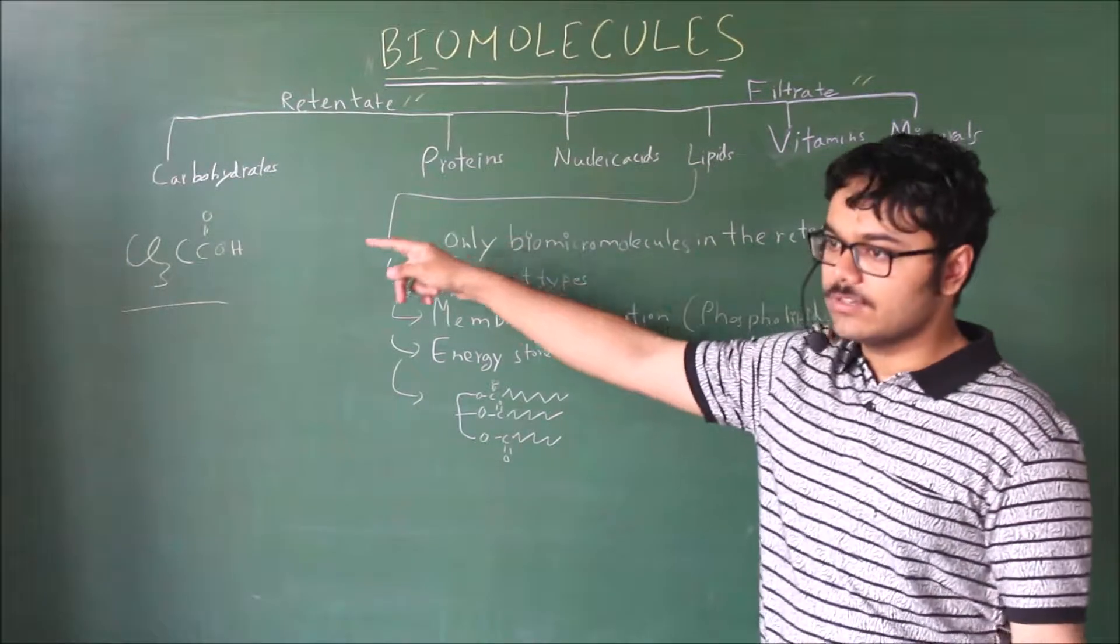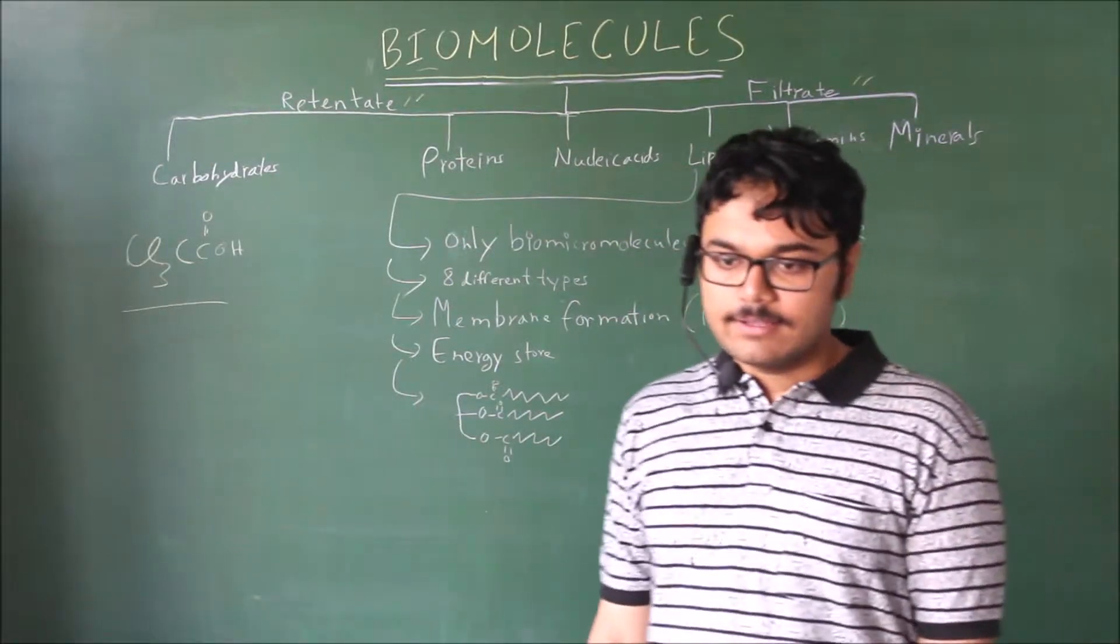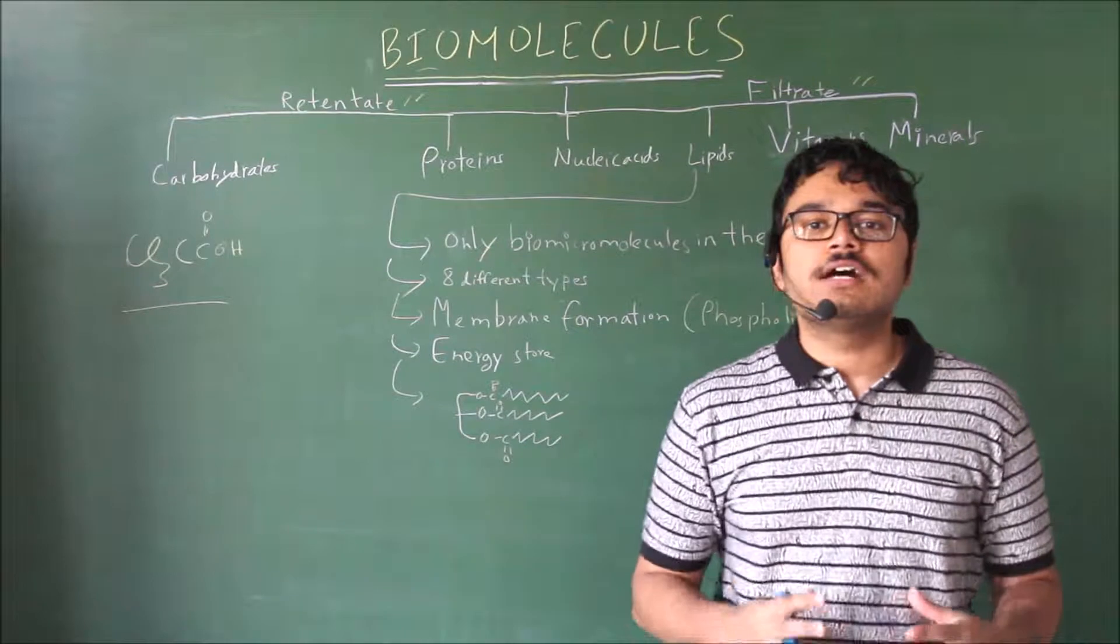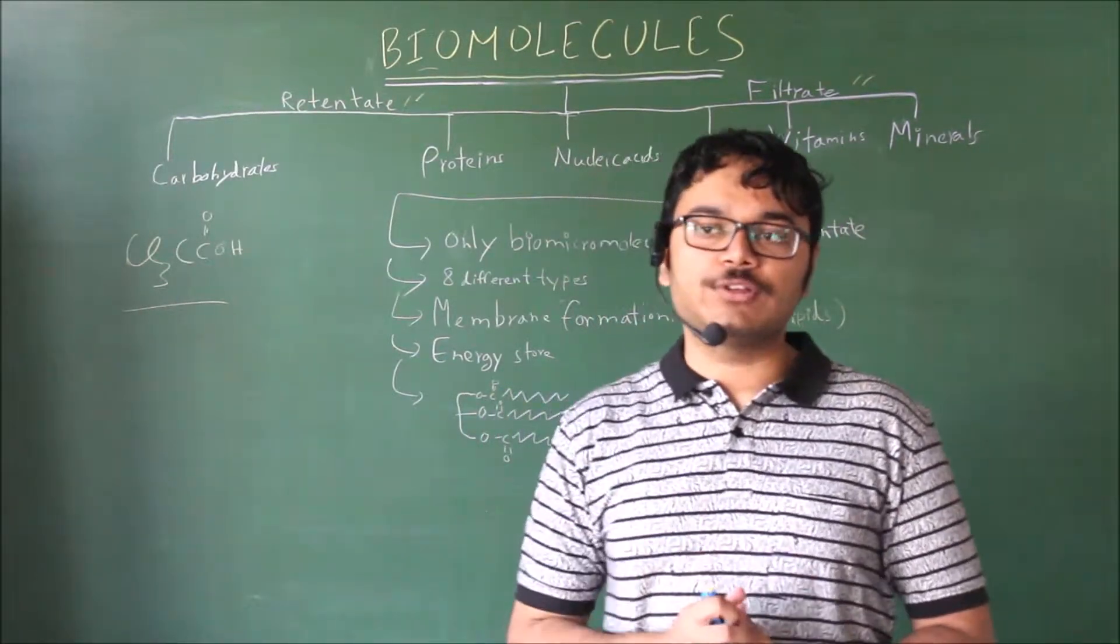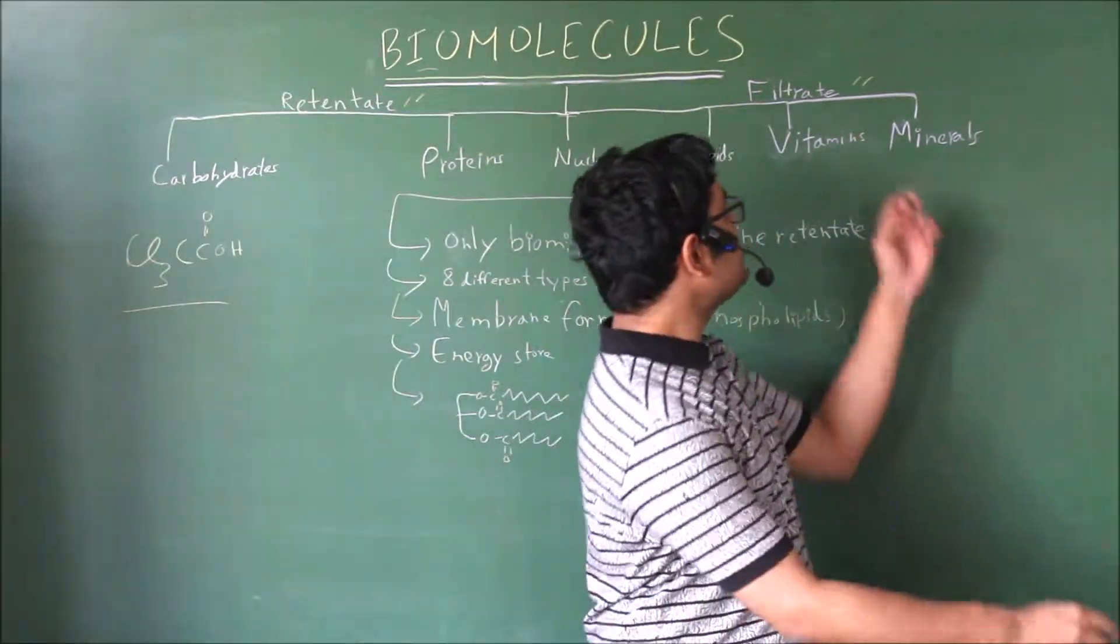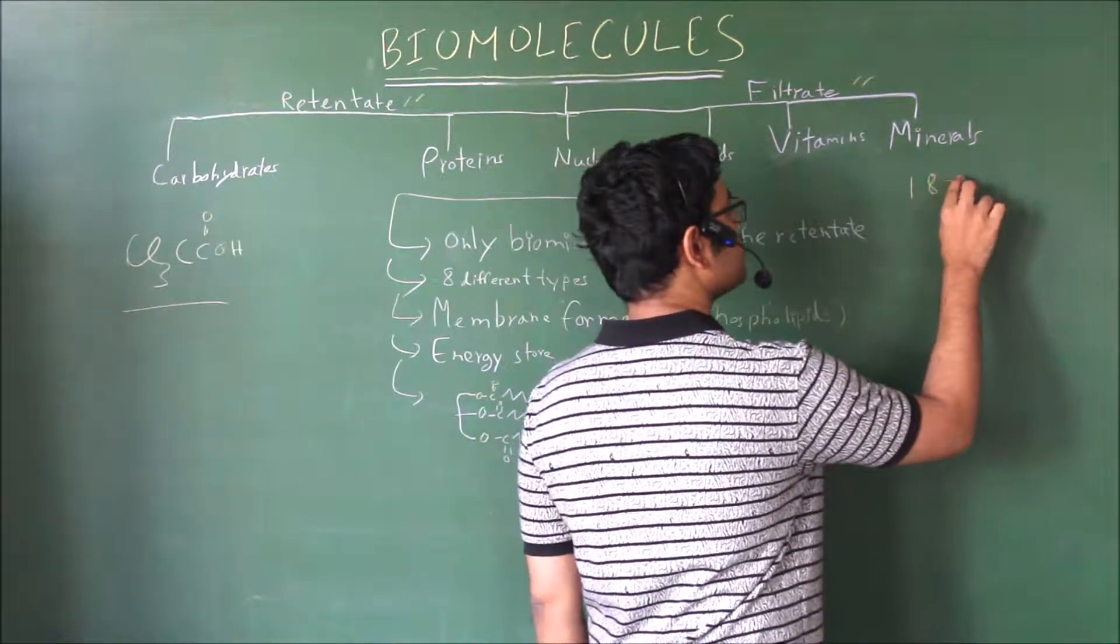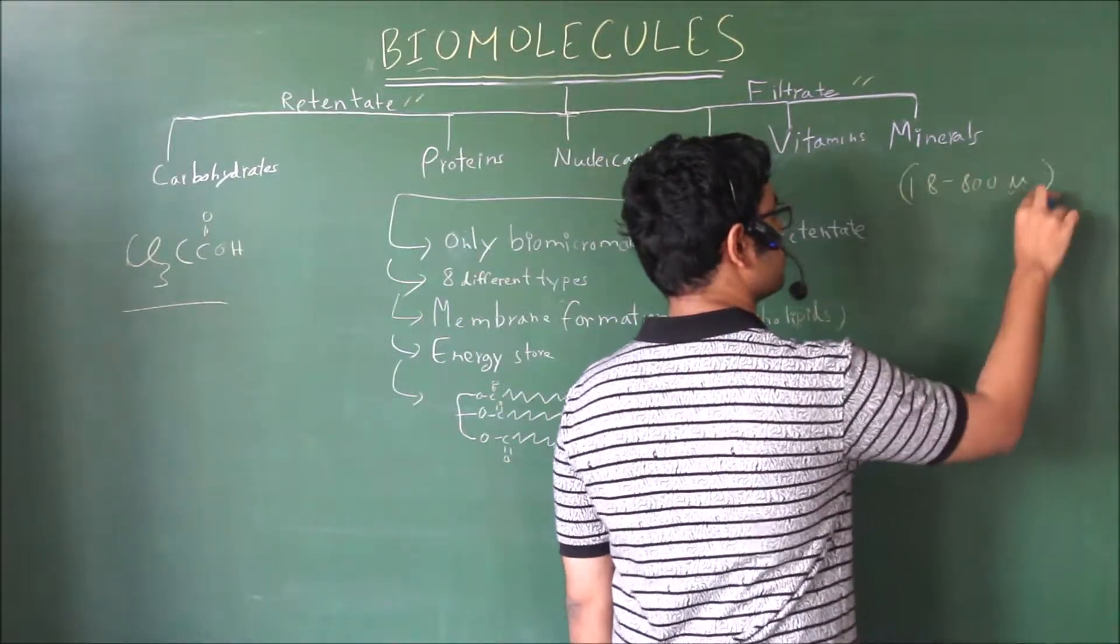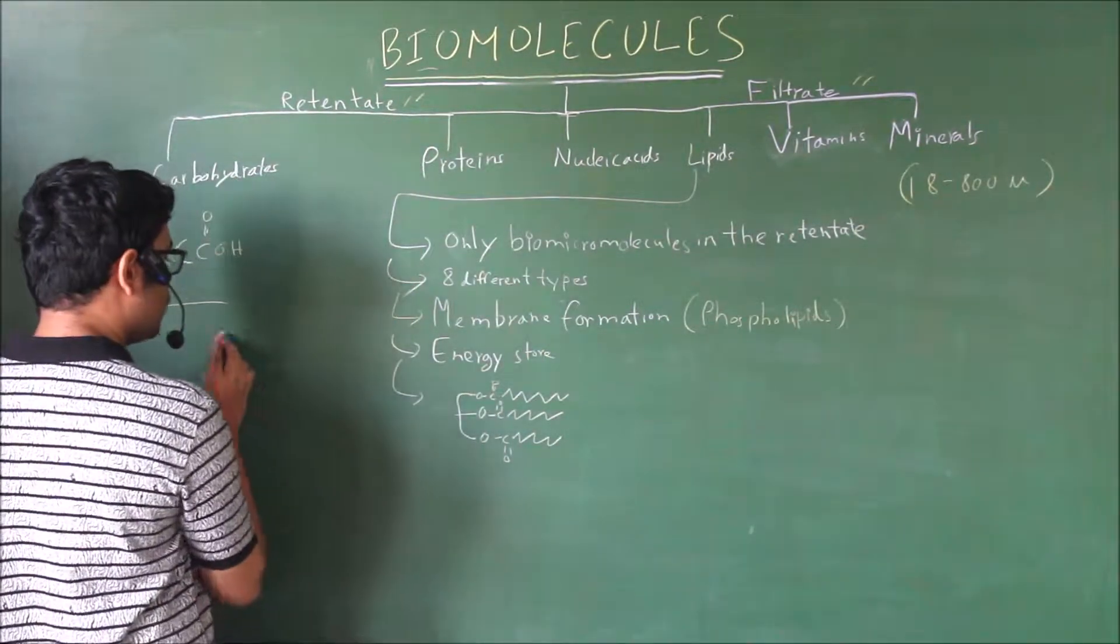In your filtrate, these things will come filtering straight out. They will dissolve in the acid and pass through your filter - vitamins and minerals. In your retentate, however, you will have carbohydrates, proteins, nucleic acids and lipids. There is a range of different sizes into which these categories fall. Based on this they are divided into biomacromolecules and biomicromolecules. These vitamins and minerals in the filtrate are in the range of 18 to 800 unified mass units. Whereas most of these in the retentate are over 800.